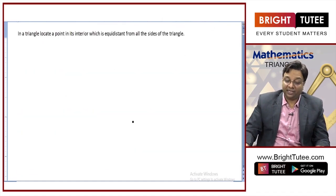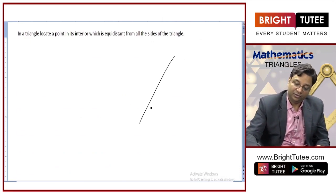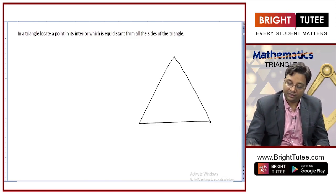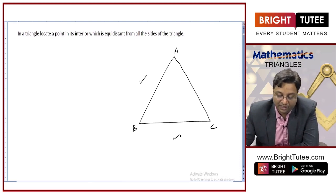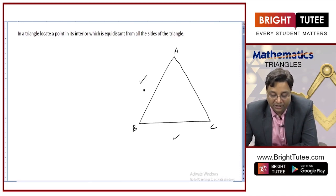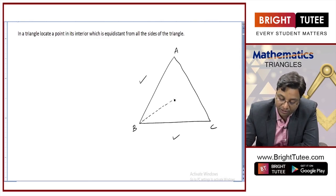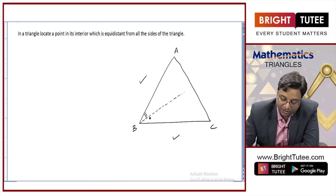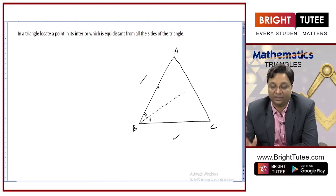Now, in a triangle, locate a point in its interior which is equidistant from all the sides. If I want a point equidistant from sides AB and BC, I will look for it on the angular bisector of the angle between these two sides. Every point on this angular bisector is equidistant from AB and BC — this distance equals this distance.